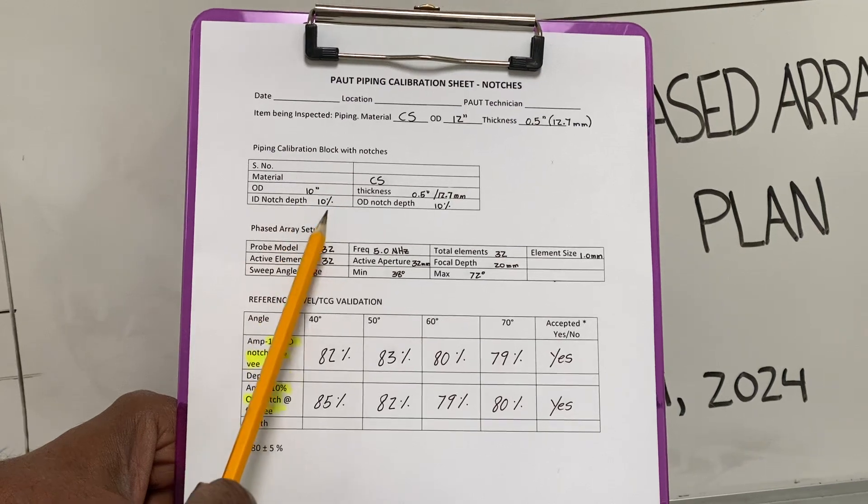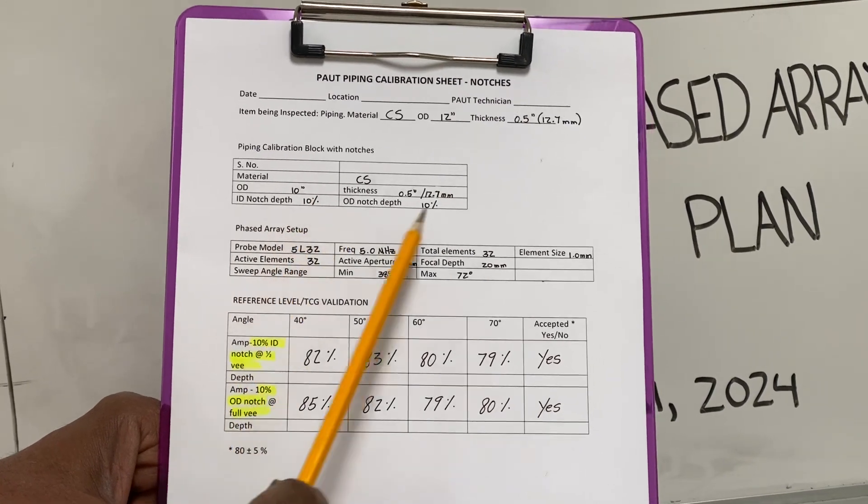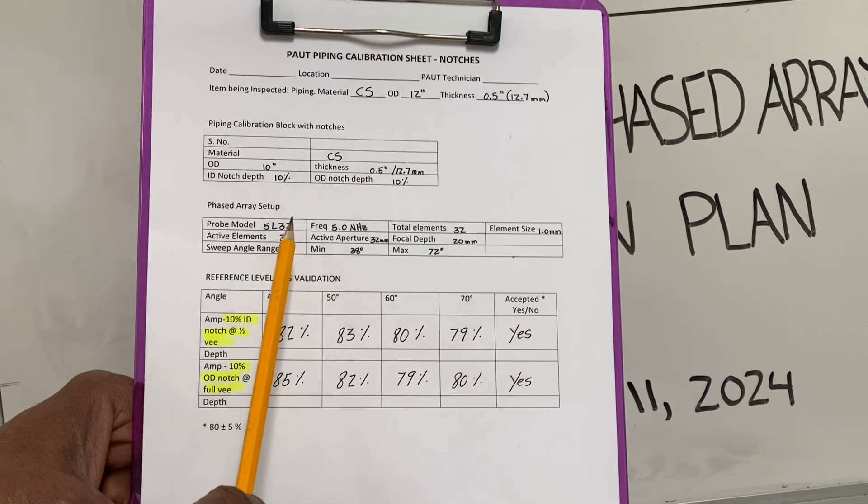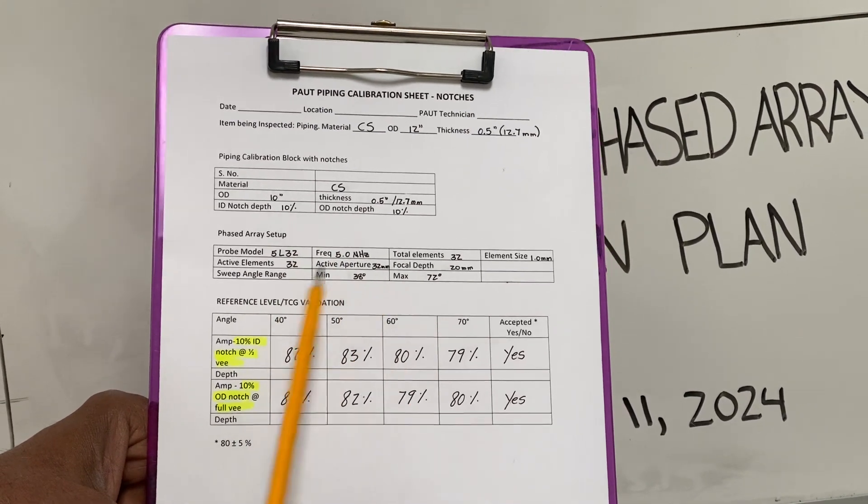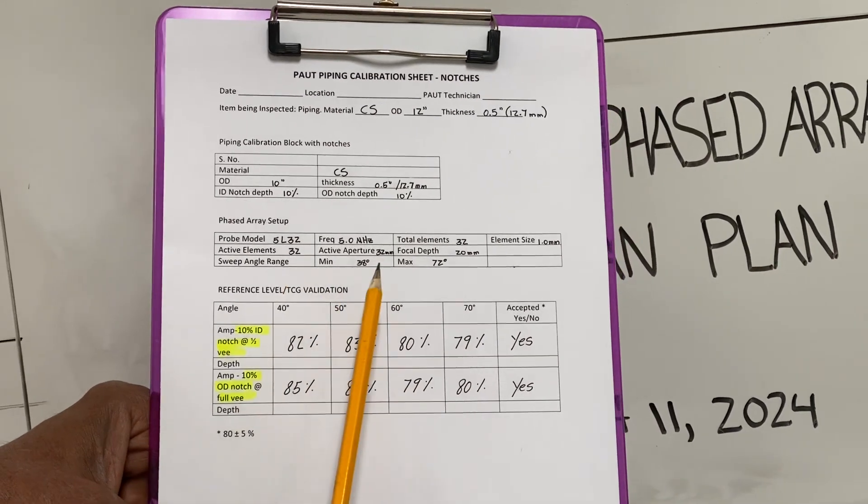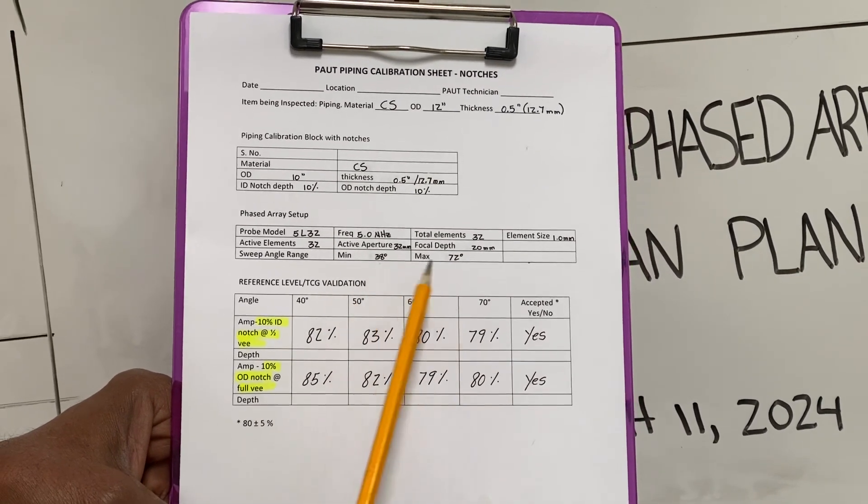For the 12 inch, we are using a 10 inch pipe with 10% notches. And here is the phased array setup, the probe, the frequency, active aperture and the focal depth. And the sweep angle is from 38 degrees to 72 degrees.